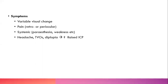TVOs are transient visual obscurations — transiently the person loses vision or vision goes blurry. That's not uncommon in optic neuropathies, and if you see that, think raised intracranial pressure. Headache is another symptom, especially a postural headache when bending down, and it can be bad enough to induce vomiting. Diplopia is another one, and it's often transient as well.